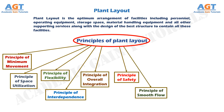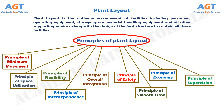Number seven: the principle of smooth flow. The layout should be so designed as to reduce work bottlenecks and facilitate uninterrupted flow of work throughout the plant. Number eight: the principle of economy. The layout should aim at affecting economy in terms of investment in fixed assets. Number nine: the principle of supervision. A good layout should facilitate effective supervision over workers.